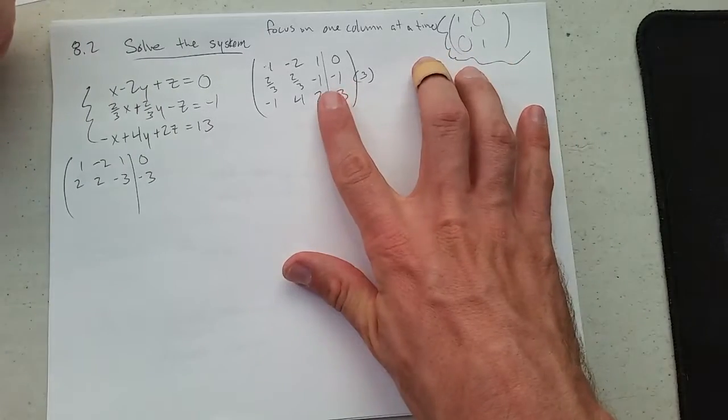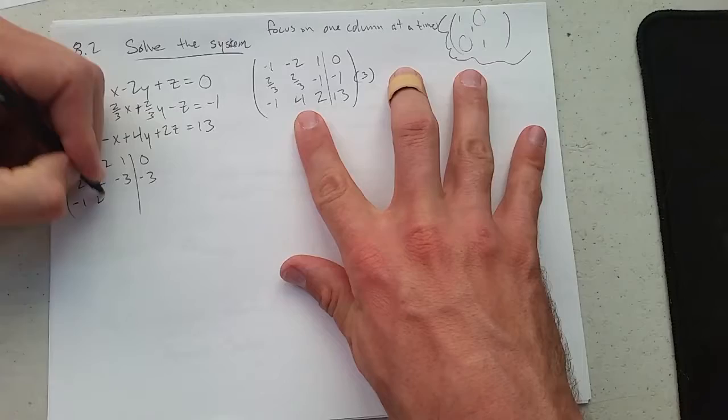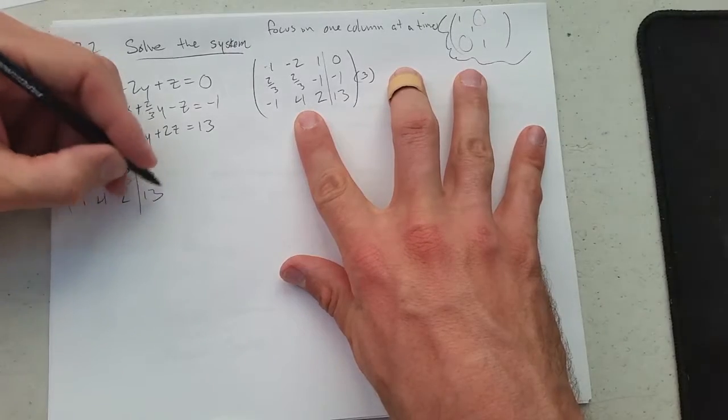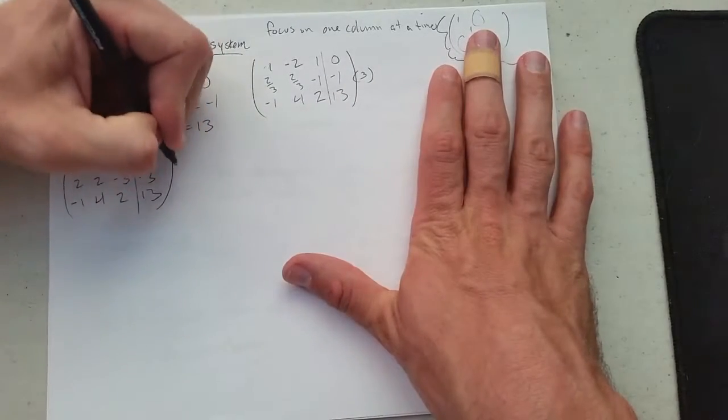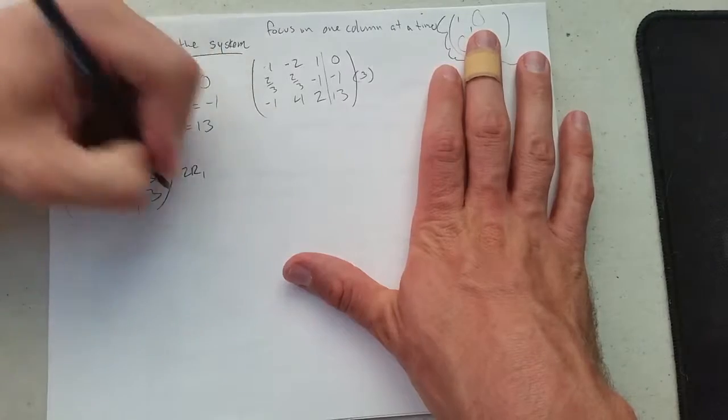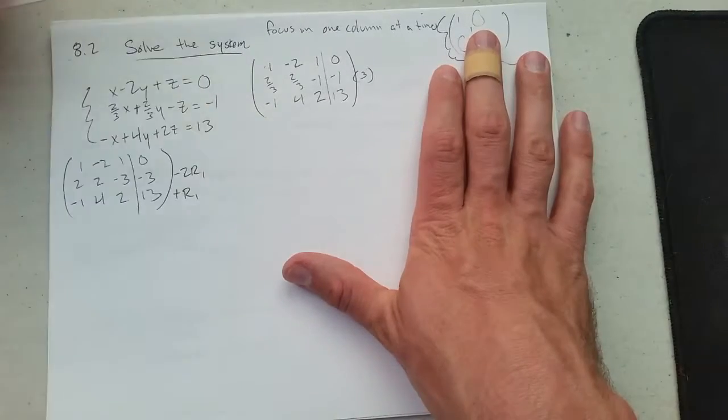So we got 2, 2, negative 3, negative 3, negative 3, negative 1, 4, 2, 13. Alright, now we can go negative 2, row 1, plus row 2.